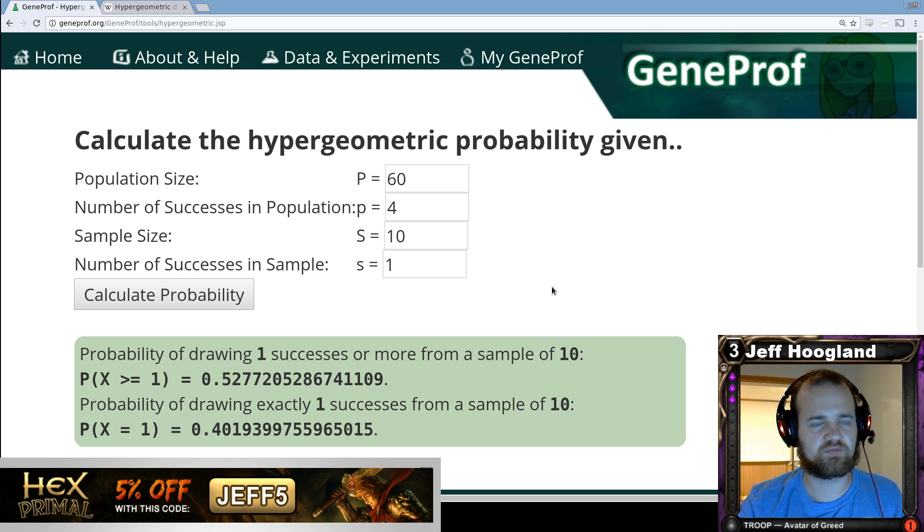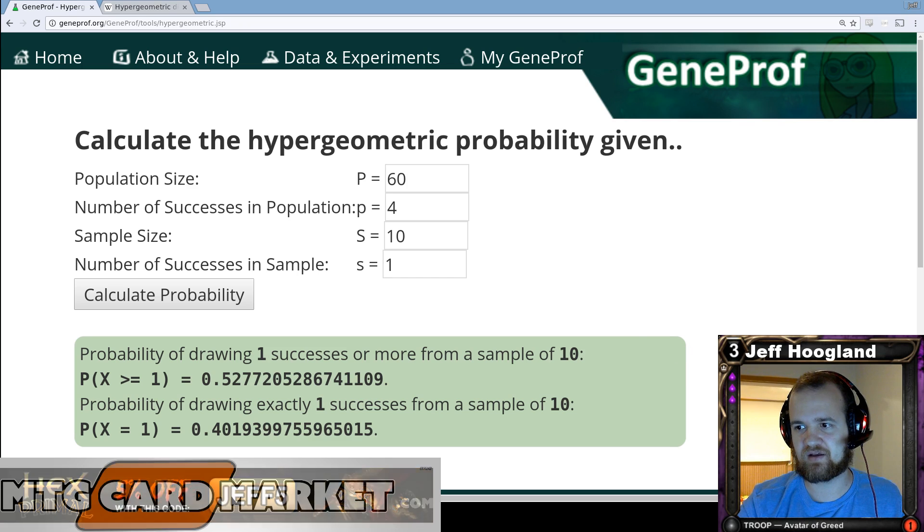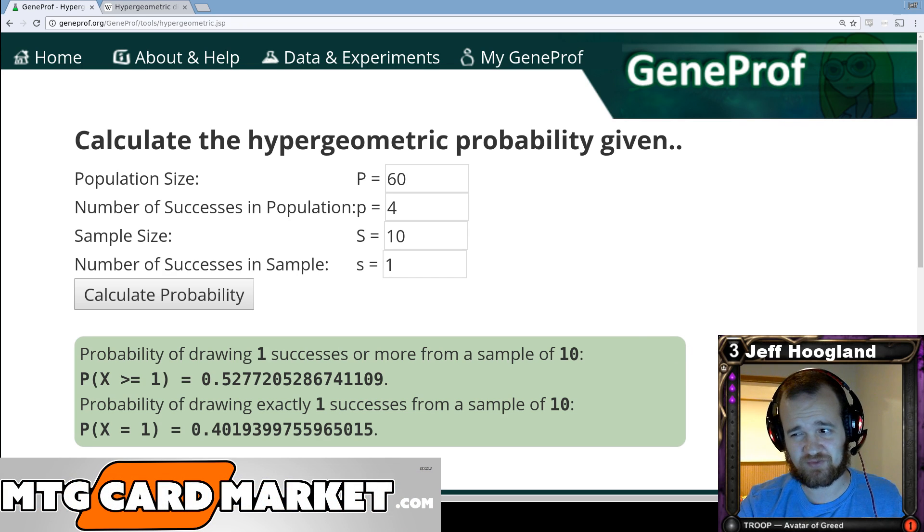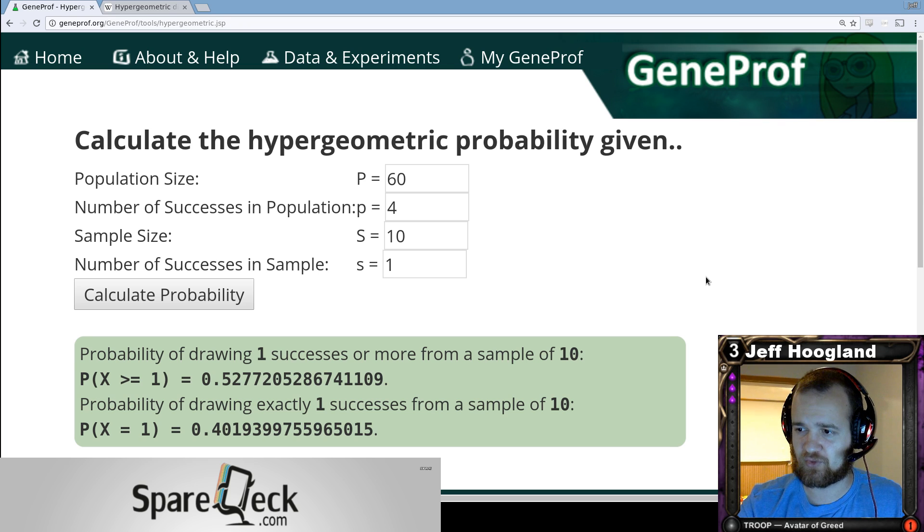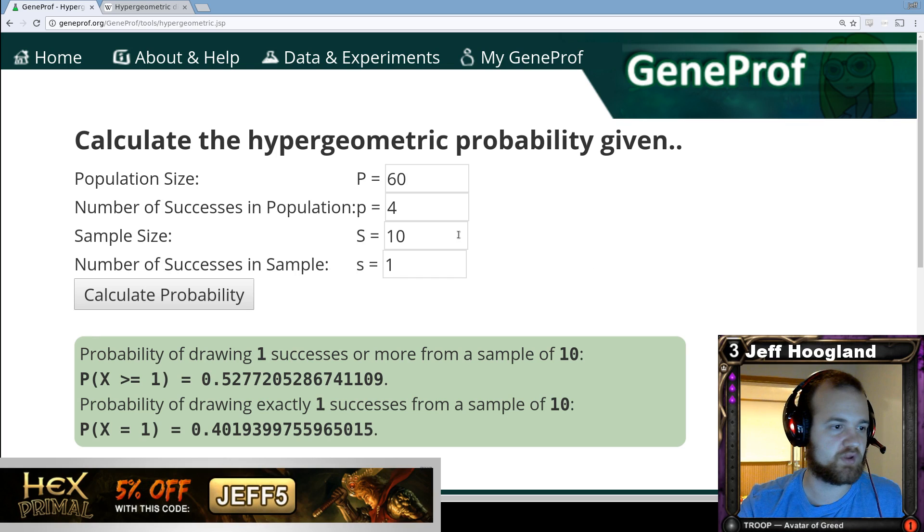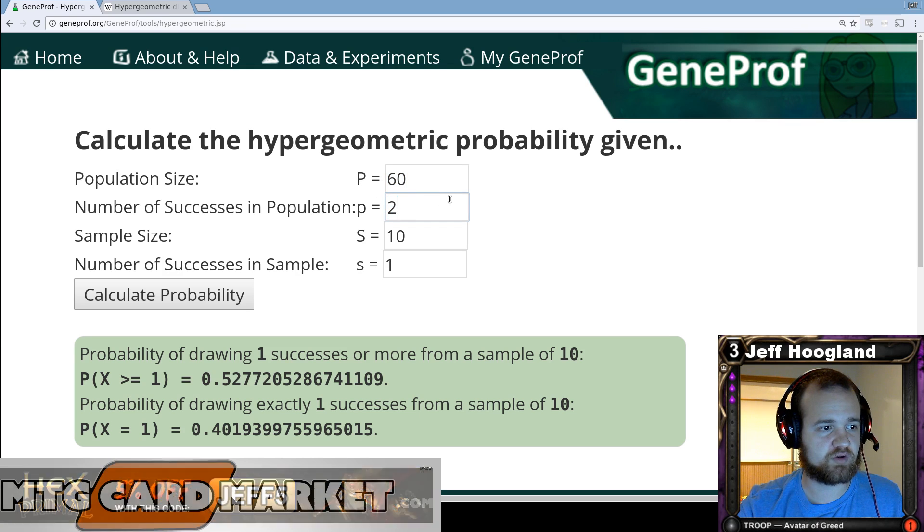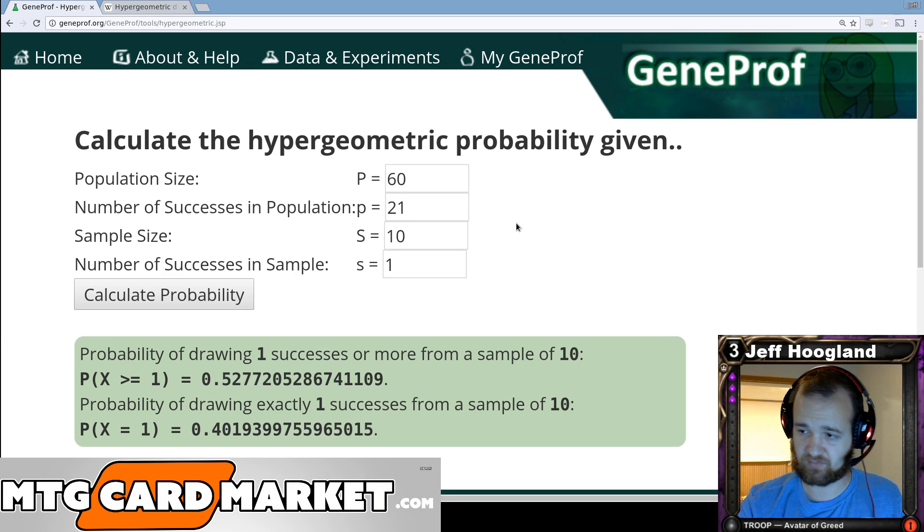So for an example, if we see here on my card, it says I cost three and I require three different blood thresholds here. So if I wanted to calculate the probability of being able to play myself on turn three, if I had, let's say, 21 sources of blood or purple in my resource base. So if I have a 60 card deck and there are 21 sources that can play me, I need three of these by turn three.